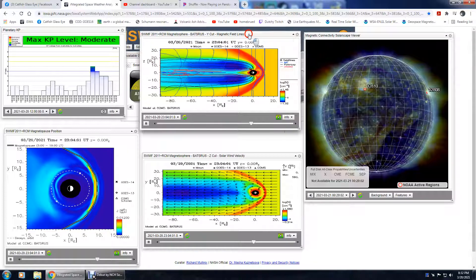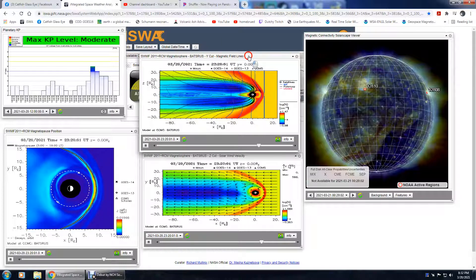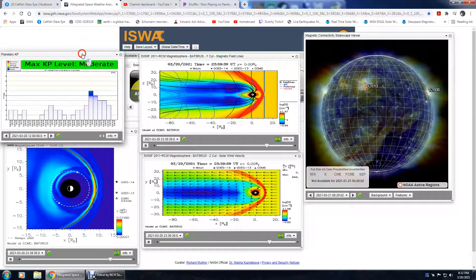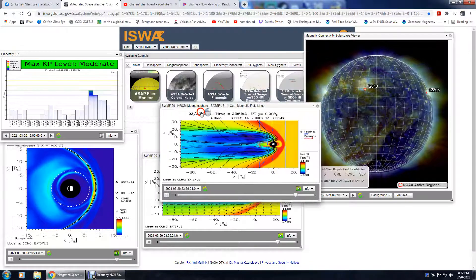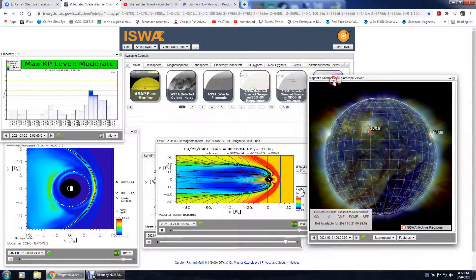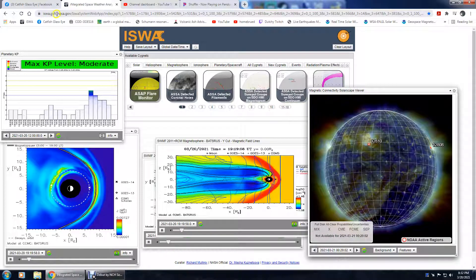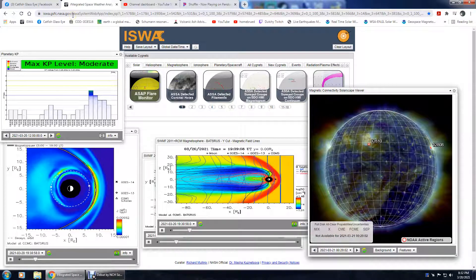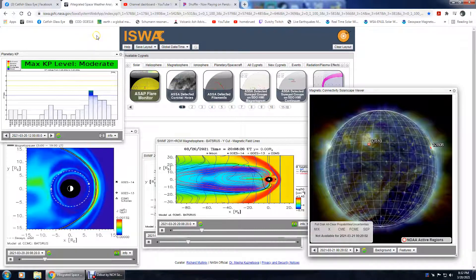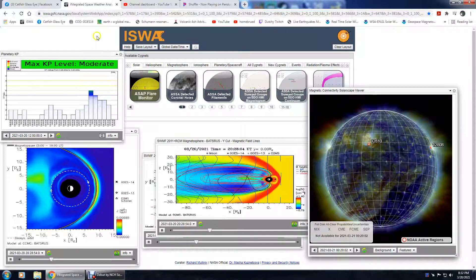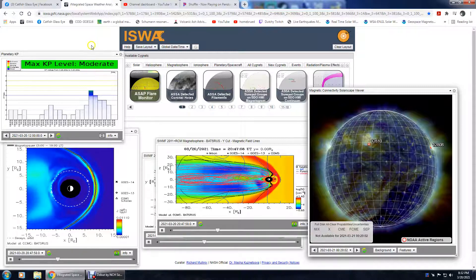Now what you want to do is go to this website iswa.gsfc.nasa.gov. I've done a video how to find this. You can just go to google.com, type in ISWA, hit enter, and it's like the second result.